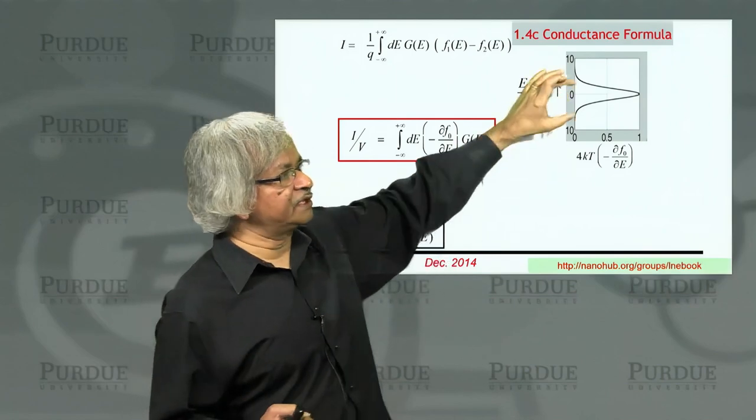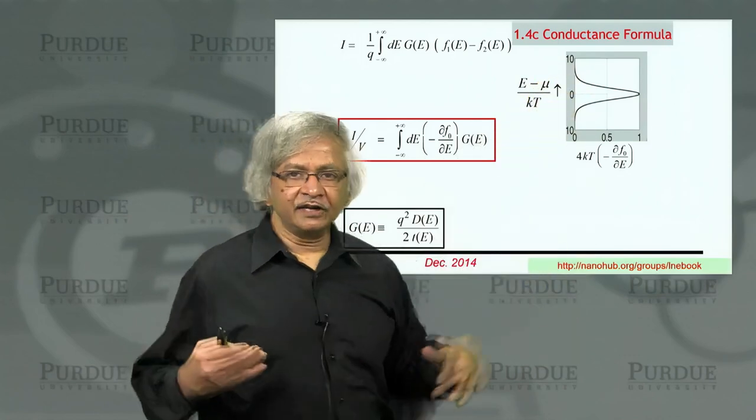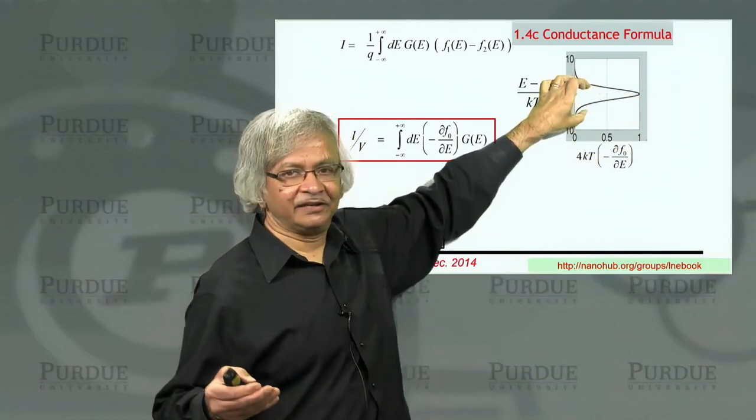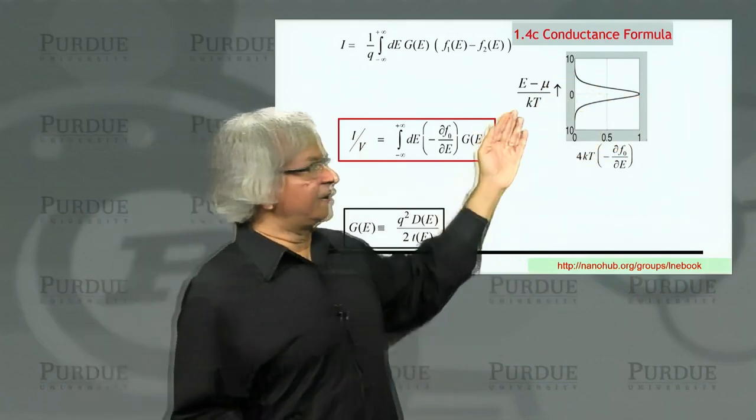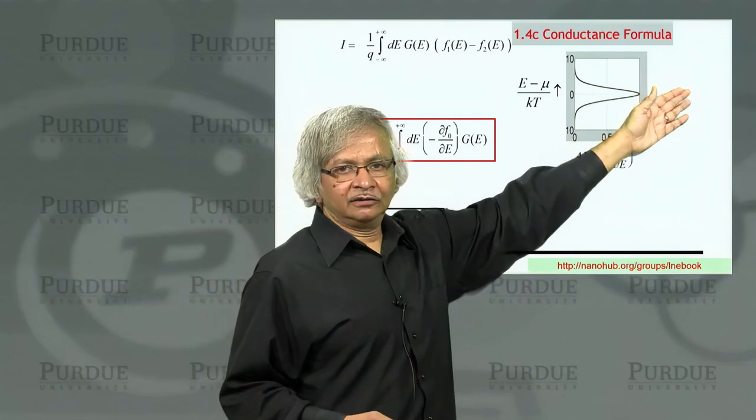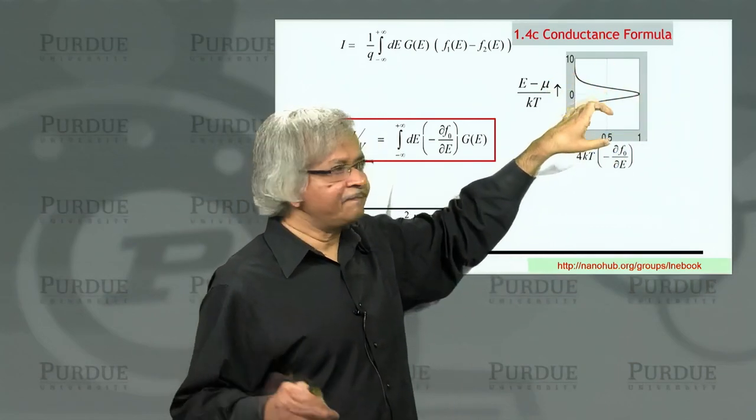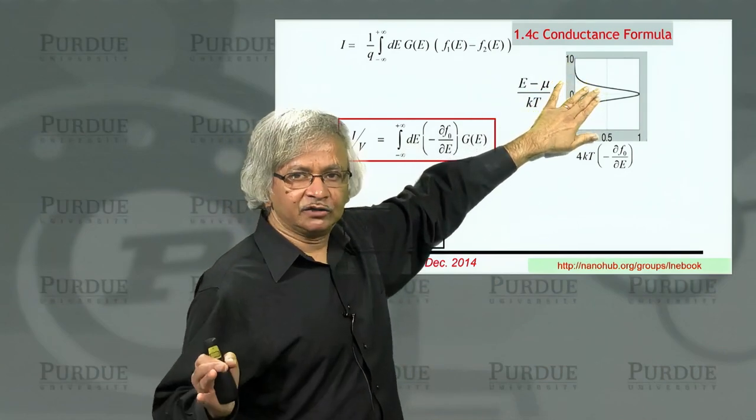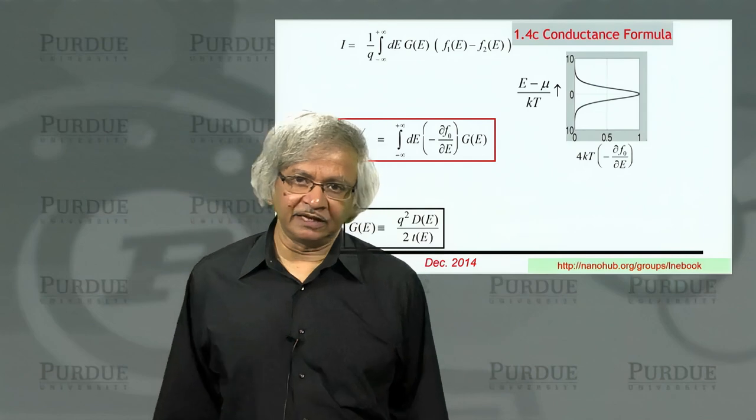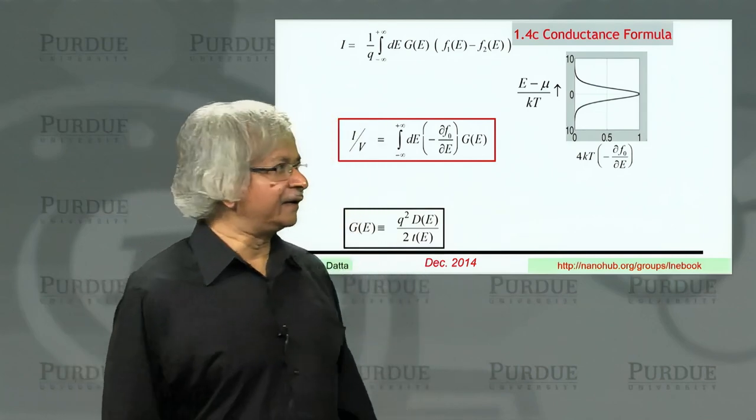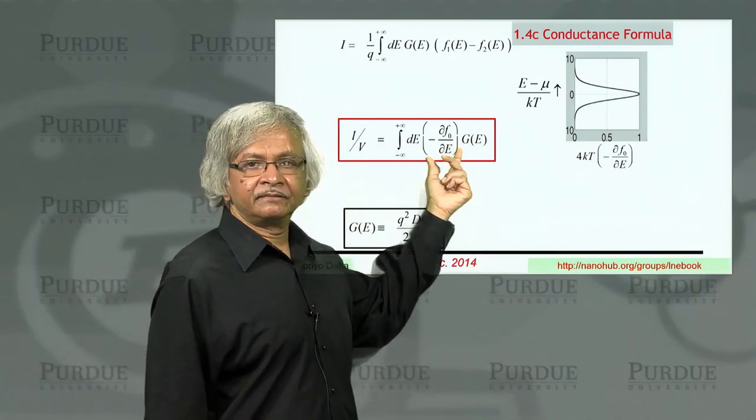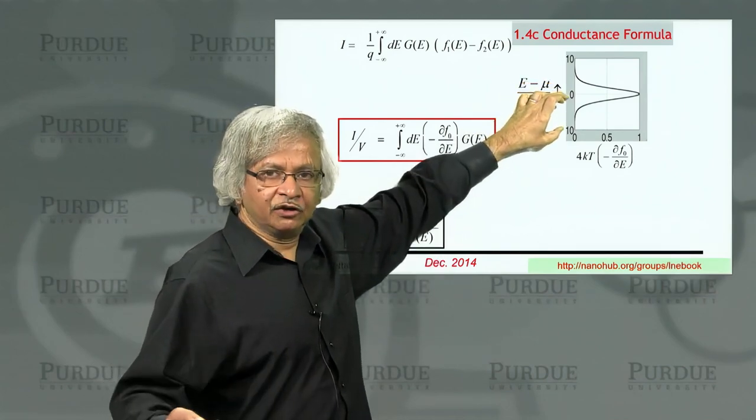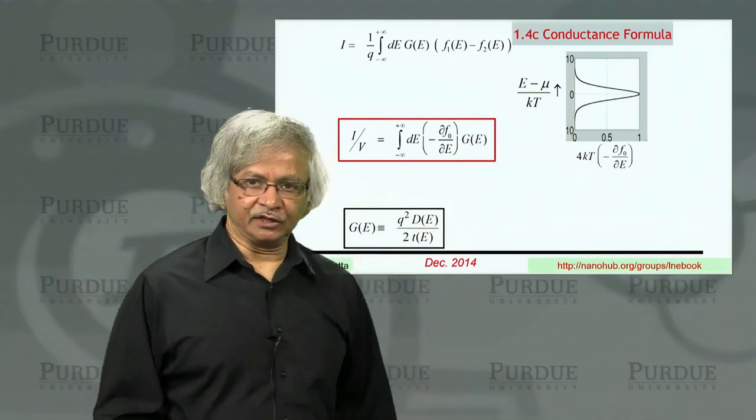Because at zero temperature, this function is very strongly peaked. In the sense, the peak value is 1 over kT, width is kT. So as T tends to zero, it becomes infinitely tall and rather thin, like a delta function. In fact, what you can show is that the area under this curve is 1. So those of you who are familiar with delta functions will recognize that this quantity, del F del E, as you let the temperature tend to zero, it actually becomes a delta function.